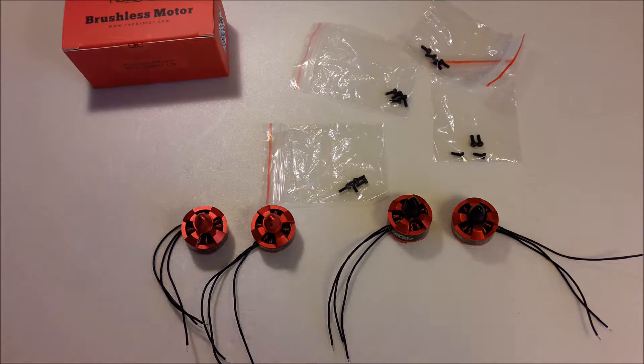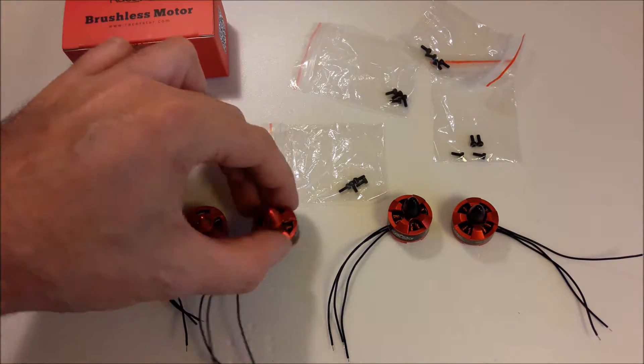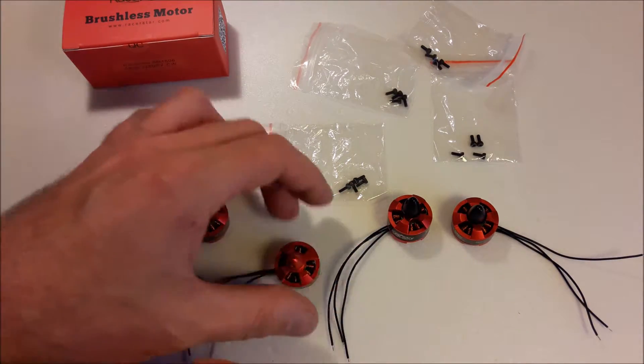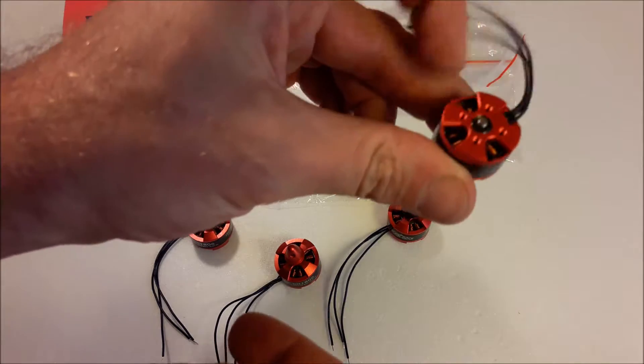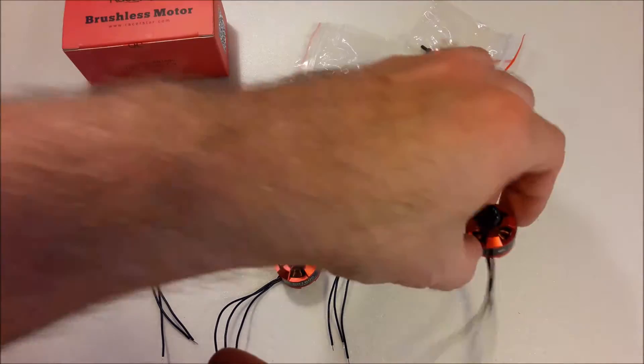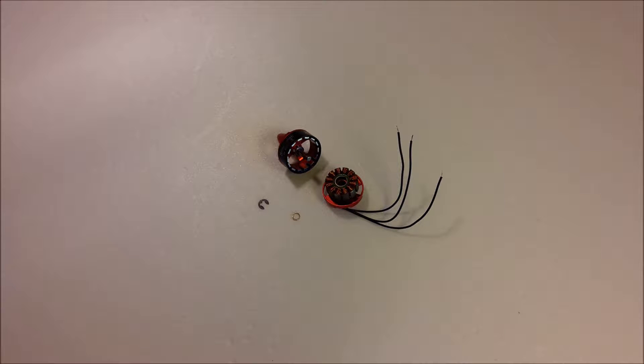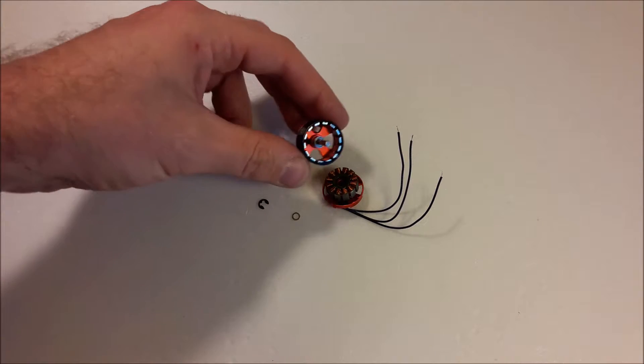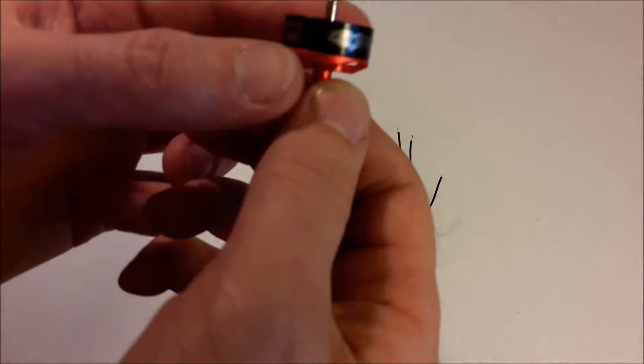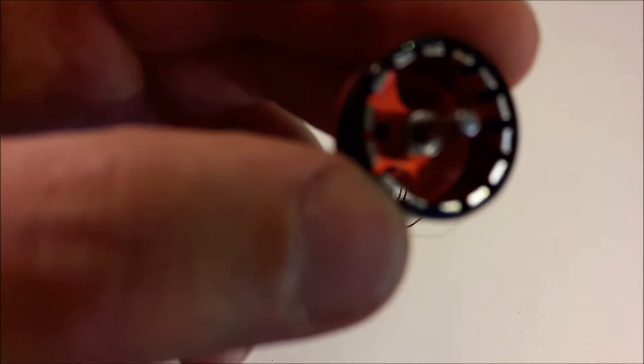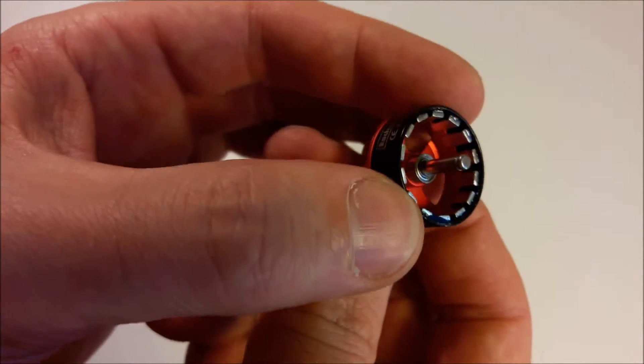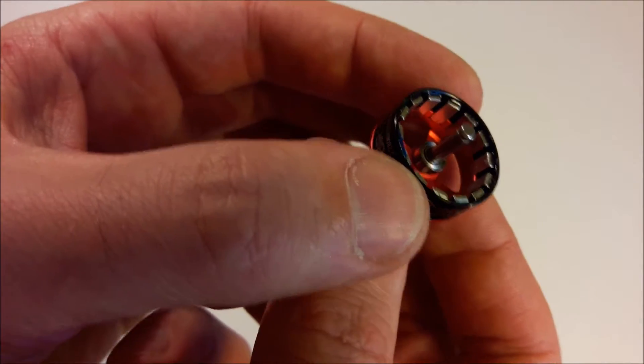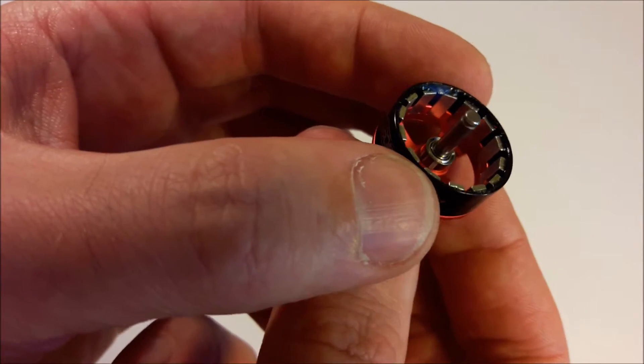And one more thing, let's take them apart. Let's look what's inside. And maybe we will find some interesting things. Okay, I've taken apart one motor. Let's look at the rotor. I will try to focus. You can see nicely glued magnets.